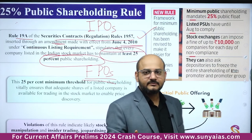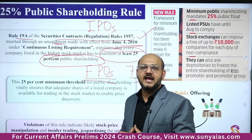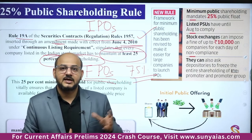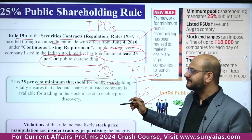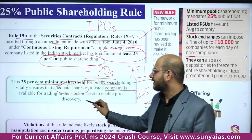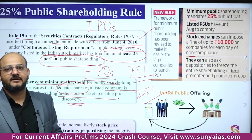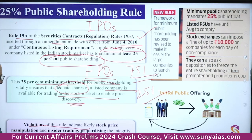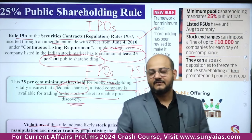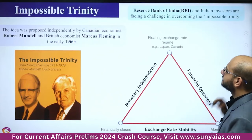At least 25% public shareholding must be maintained. The remaining 75% can be held by promoters, relatives, partners, or subsidiary and surrogate companies. This 25% minimum threshold vitally ensures that adequate shares are available for trading in the stock market to enable better price discovery. It also ensures share prices are not manipulated. Violations of this rule indicate stock price manipulation and insider trading, jeopardizing the integrity of the equity market itself.